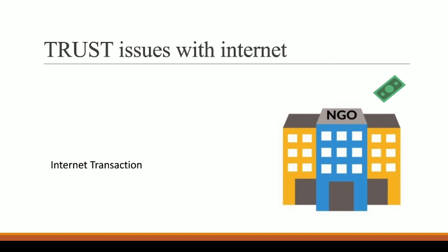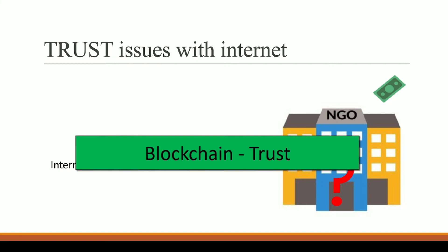In this whole picture you can clearly see that we cannot trust this NGO, and why? Because we cannot trust the internet — we do not know where the money from our internet transaction is actually going. So one thing is for sure: the internet cannot provide trust to us. The only technology that can provide trust is blockchain. With the help of blockchain, we can bring trust to the table. You can trust this blockchain technology, and once we move on to blockchain applications, you will understand how blockchain actually brings trust.